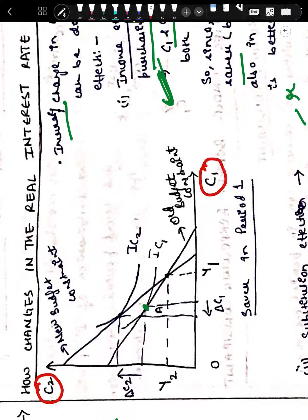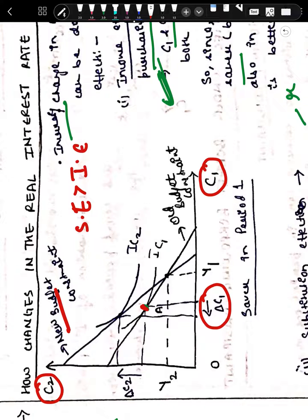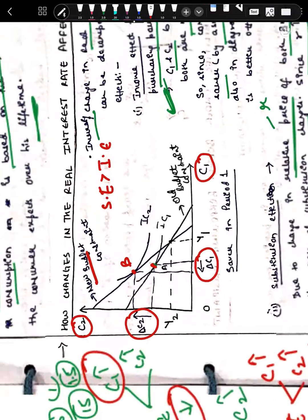In the diagram, consumption in time period two is on the vertical axis and consumption in time period one is on the horizontal axis. Point A is the initial consumption level — he is a saver. With the real interest rate increase, there is a new budget constraint. Assuming substitution effect is greater than income effect, consumption in time period one reduces and consumption in time period two increases. The consumer reaches a new optimum point B, which lies on a higher indifference curve, meaning the consumer is better off.